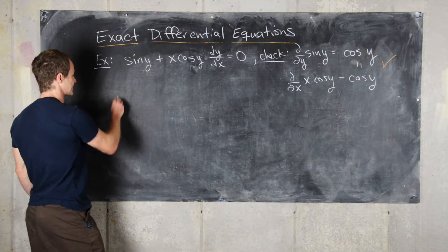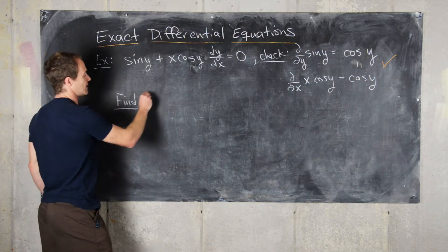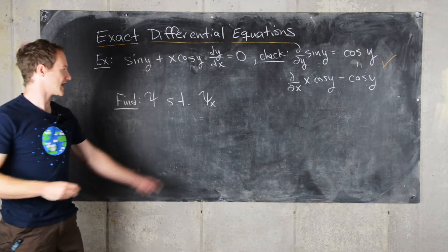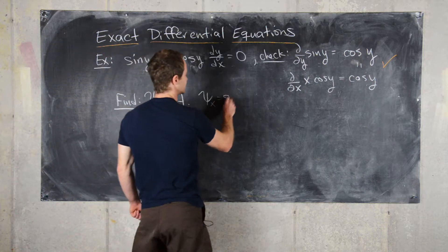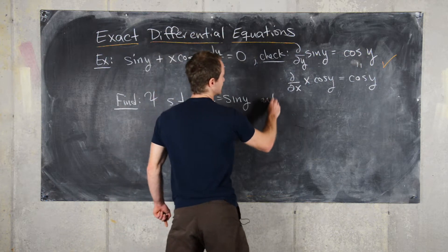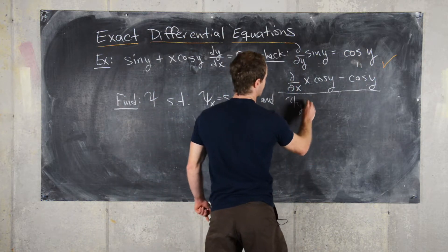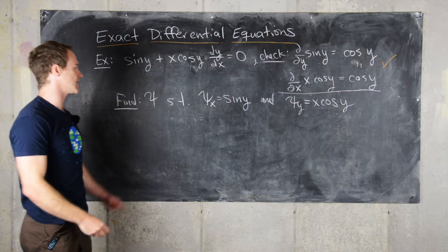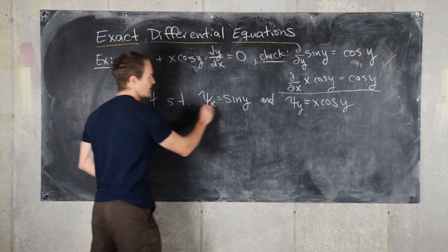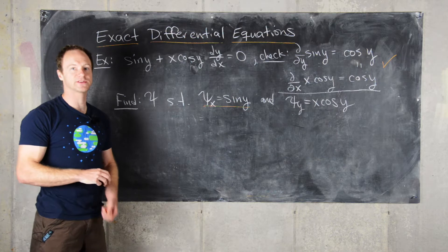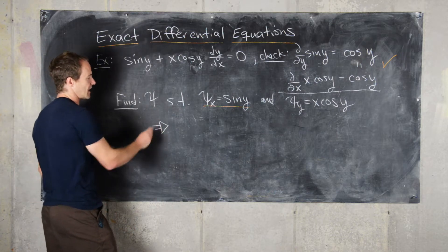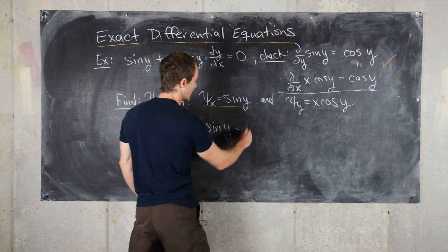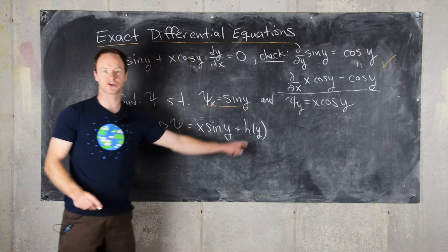Now we need to find a function Psi such that the partial of Psi with respect to X equals sin Y, and the partial of Psi with respect to Y equals X cos Y. We start with the first condition and take the antiderivative of both sides with respect to X. That gives us Psi equals X sin Y plus H(Y), where H(Y) is an arbitrary function of Y.